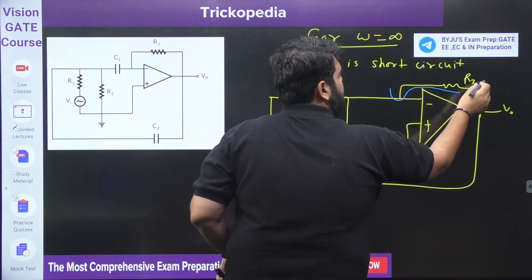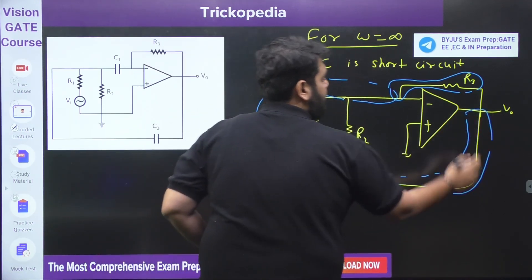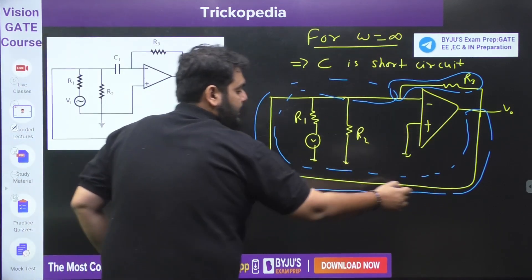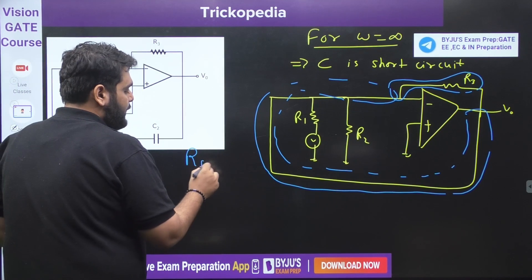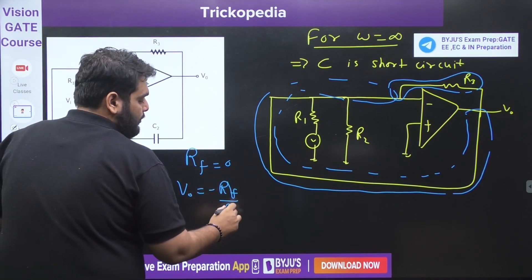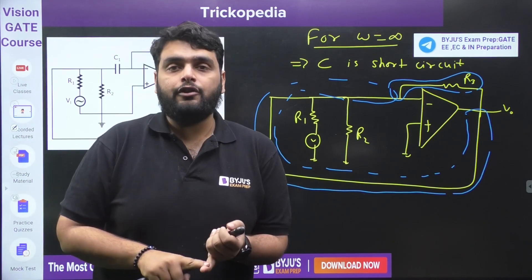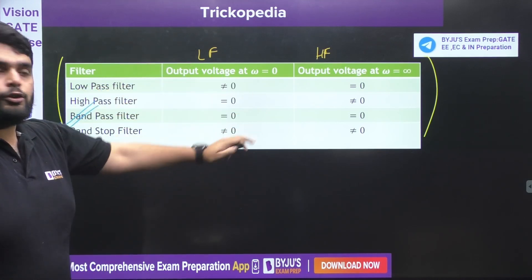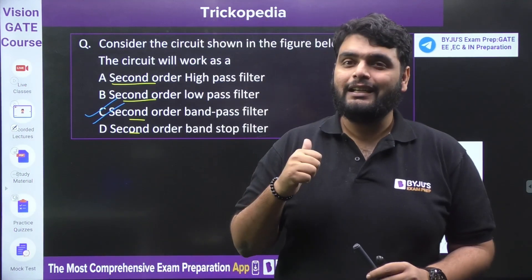Notice that there is a feedback path, but also a second feedback path is given — very important point. There are two feedback paths and both are in parallel. The second feedback path does not contain any resistor, meaning it is a short circuit feedback path, so its feedback resistance is zero. Therefore the output voltage equals minus Rf divided by Rin multiplied by input voltage, which comes out to zero. So at low frequency output is zero, and at high frequency output is also zero. Which type of filter is this? It is a band pass filter — because output is zero at both low and high frequencies.